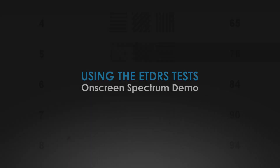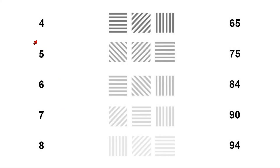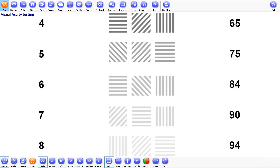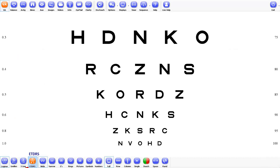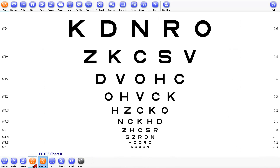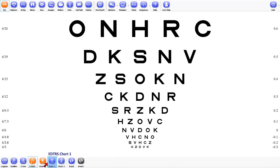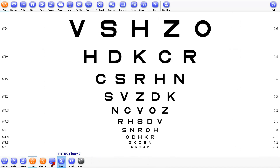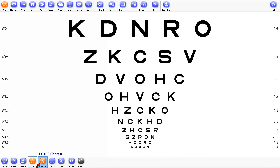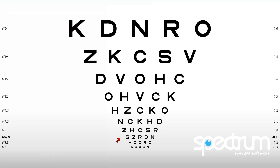So let's have a look at what this looks like and how these tests are done. Select VA from the top toolbar and then ETDRS from the lower toolbar. The Spectrum ETDRS chart R will be displayed as the default. We have included all the ETDRS charts, so you can select chart R, chart 1, or chart 2. The additional chart 1 and chart 2 can be used to avoid patient letter memorization while still maintaining a standard degree of difficulty between the charts.